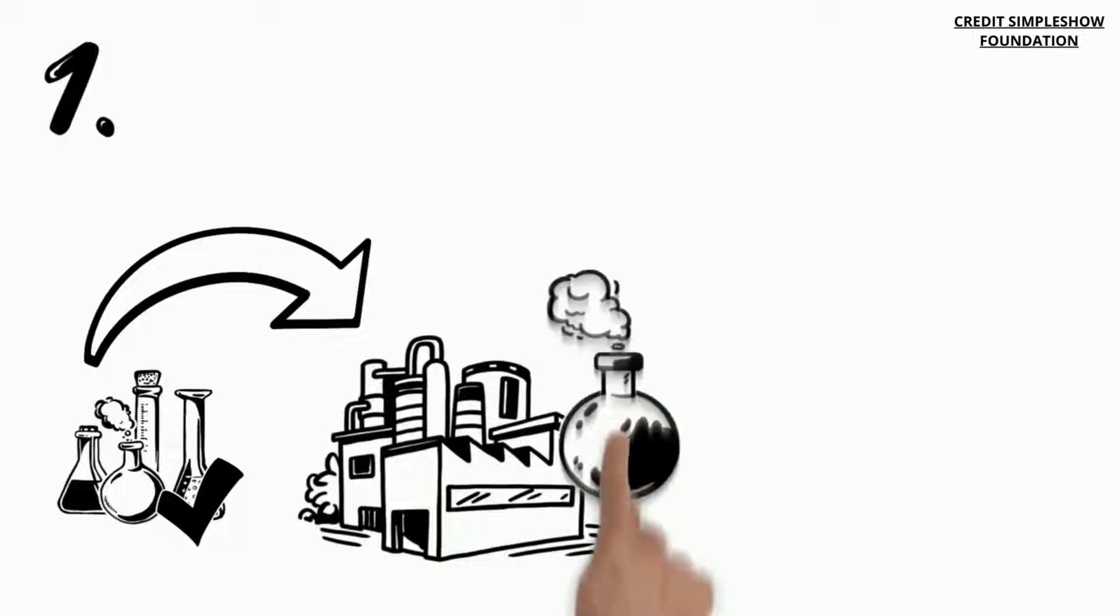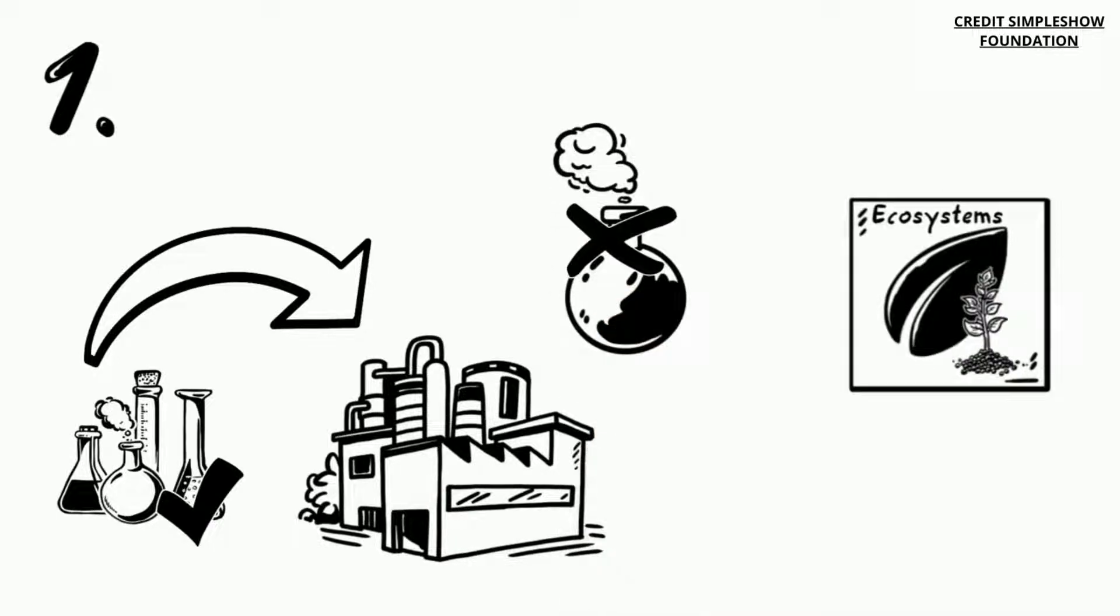1. Environmentally friendly chemical engineering can improve methods of production and reduce or even prevent harmful effects upon ecosystems or the environment.